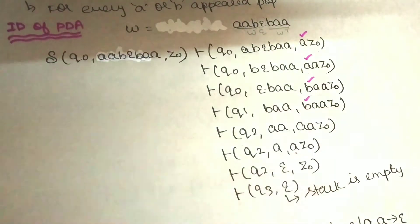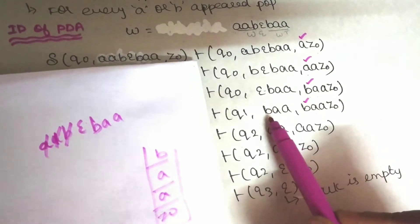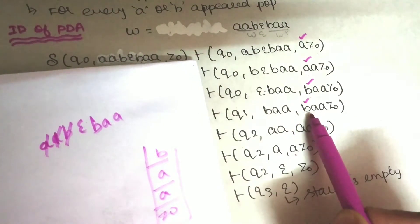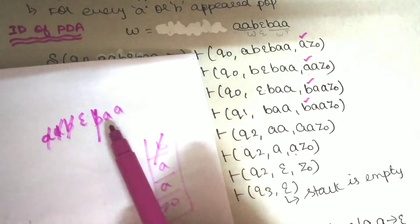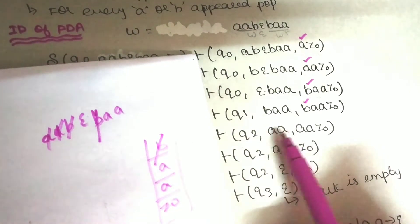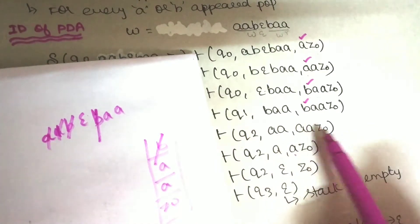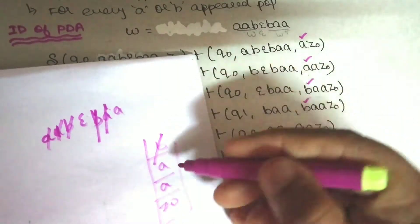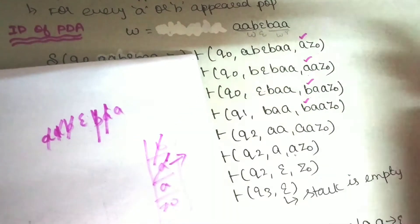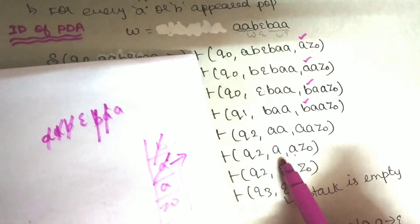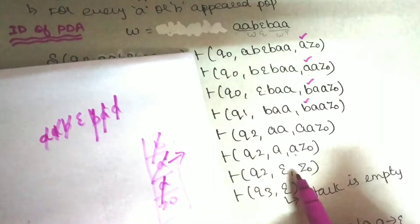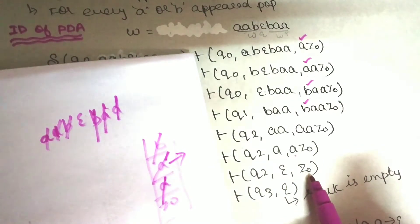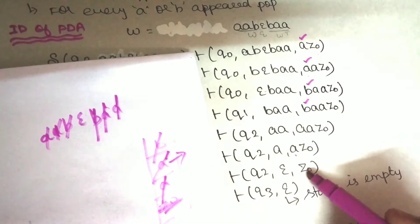If you read the input string and the top of the stack is B, that means B matches — we will pop. What is the remaining input string? A, A. What is the stack? A, A, Z0. The top of the stack is A. The top of the stack is a match — we will pop. Then the top of the stack becomes A, Z0. Now look at the top of the stack: A, A is a match. So we pop again. The input element matches and in the stack, Z0 is the match. So Z0 is removed.